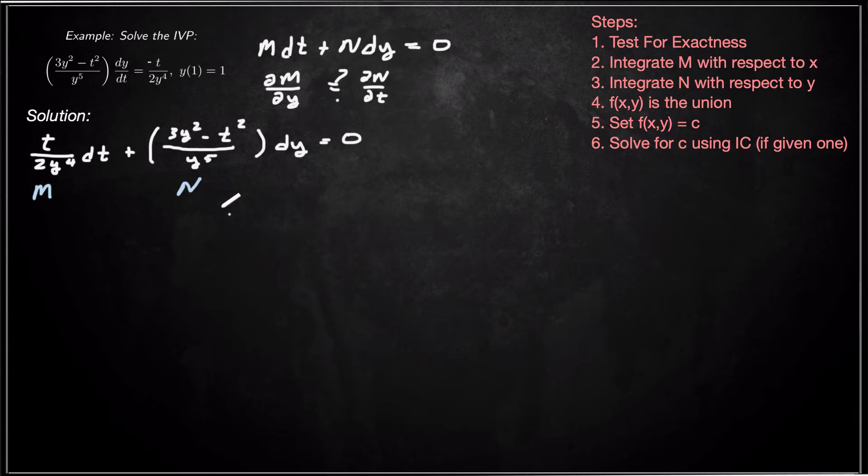Don't fall into the temptation to do that. So now what we need is ∂M/∂y. So now we're at our test for exactness. Differentiate this M with respect to y. That's going to be -4 times t/(2y⁵). Just differentiate it with respect to y. Treat everything else like a constant. That turns out to be -2t/y⁵.